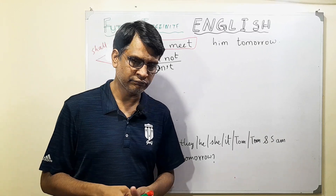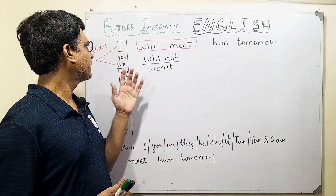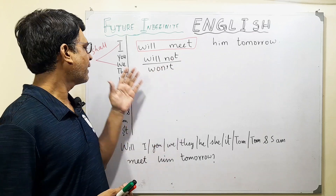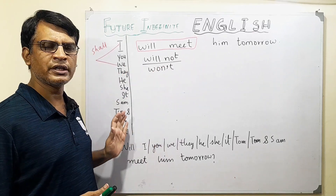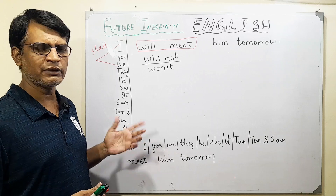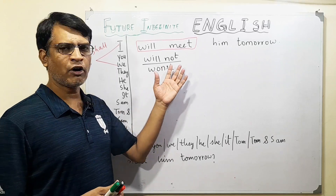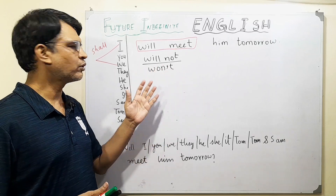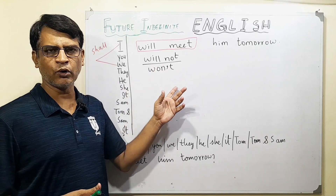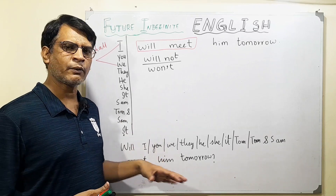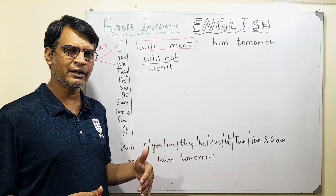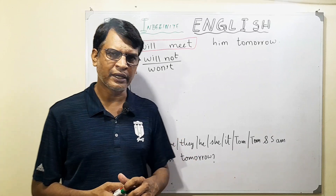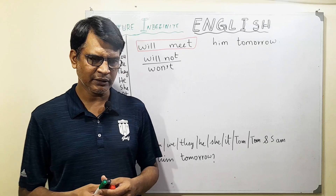So as a quick review: future indefinite is with 'will' and the first form of verb. Whatever the subject — I, you, we, they, he, she, it, Tom (one individual), Tom and Sam (two people) — the form will be the same, there won't be any change. Negative is with 'will not': I will not, you will not, we will not, they will not. The short form is 'won't'. And the question is made by taking out 'will' to the front: will I, will you, will we, will he, will she, will it.